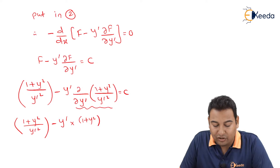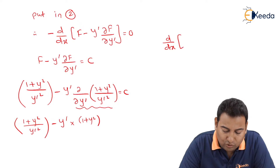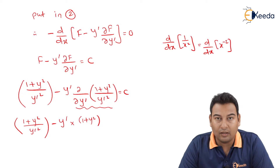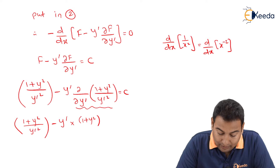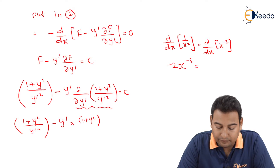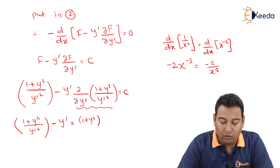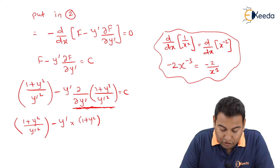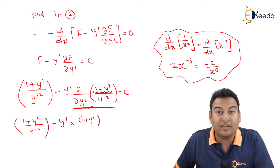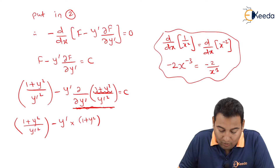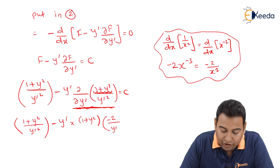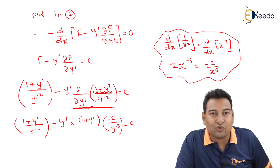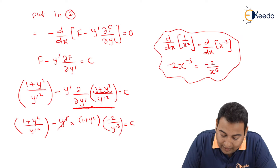We are left with the derivative of 1/y'². The derivative of 1/x² can be written as x^(−2), giving −2x^(−3), which is −2/x³. Similarly, the derivative of 1/y'² is −2/y'³. The y' from outside cancels with the cube, leaving 2.